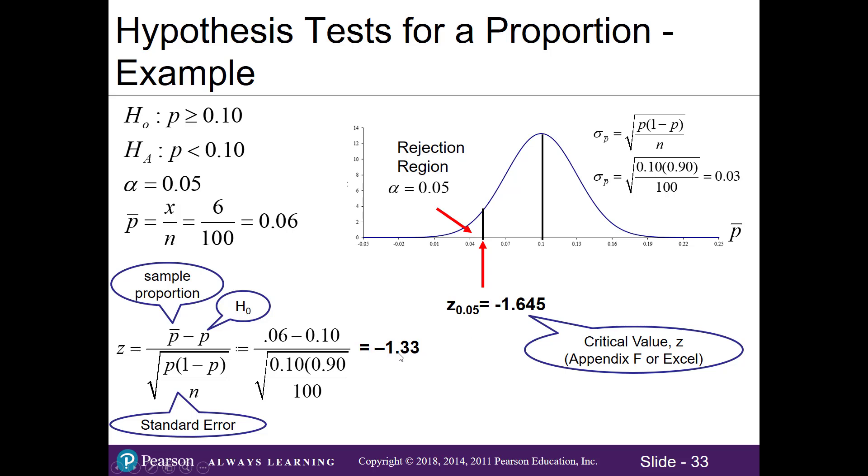Now we want to compare our test statistic to our critical value. Where does the negative 1.33 fall in our distribution? If I have to draw it, I'd put it around here. We can see it's to the right of our critical value or our cutoff point. So what does this mean? Because our z-test statistic of negative 1.33 is not less than our critical value of negative 1.645, we do not reject the null. Over here is the do not reject region. We only reject when it's in the tail.